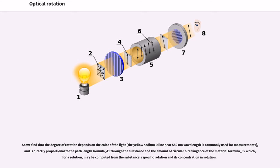So we find that the degree of rotation depends on the color of the light, and is directly proportional to the path length through the substance and the amount of circular birefringence of the material which, for a solution, may be computed from the substance's specific rotation and its concentration in solution.